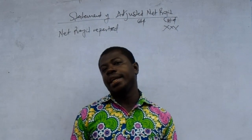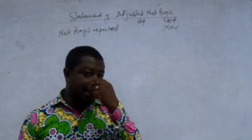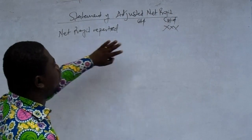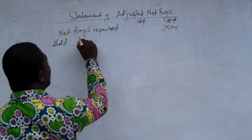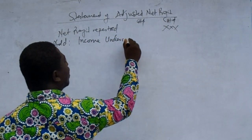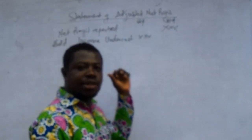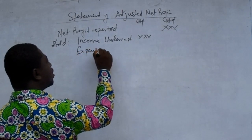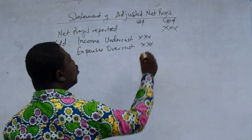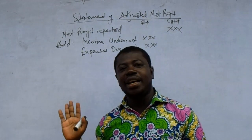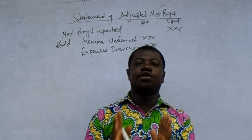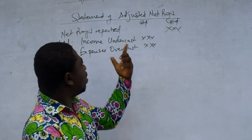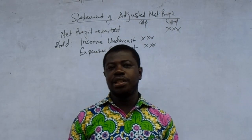Starting with income: if income is understated, we have understated profit, so we add it back. On the statement, after net profit reported, we add income undercast. Income overcast will be deducted. We also add expenses overcast. When you understate your income or overstate your expense, you are reducing profits — so that difference must be added back. That is how we go about the statement of adjusted net profits.